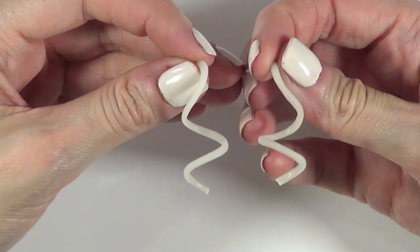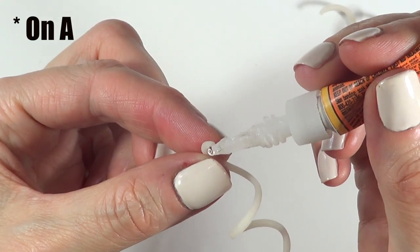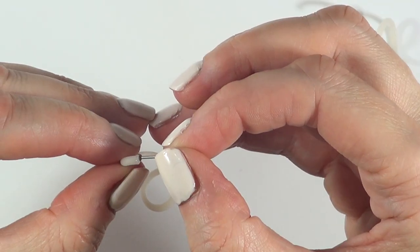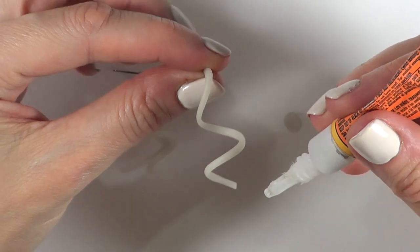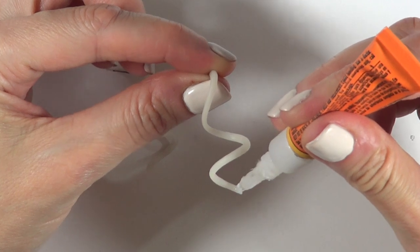I'm just going to be gluing the earring part and waiting for that to dry. Then I'm going to glue the pearl, and as you can see, it's being glued on the back of the spiral.